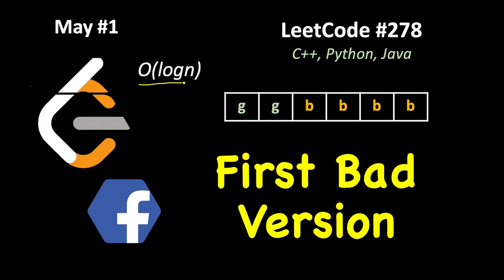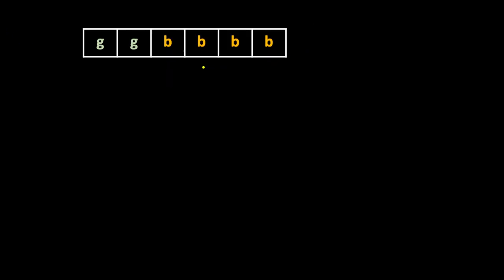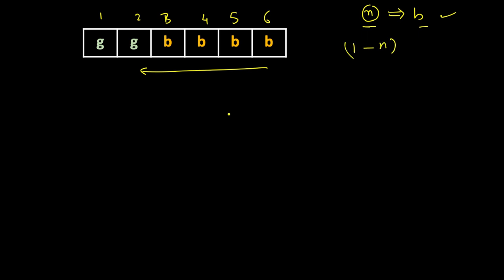We will use a binary search approach and do it in O(log n). Here we have versions starting from one, two, three, four, five, six. You are not even given an array — you are just given a number, the current version number, and it's bad. So either it started from the current version or somewhere from one to n. We query the middle one and ask: is this bad or not?